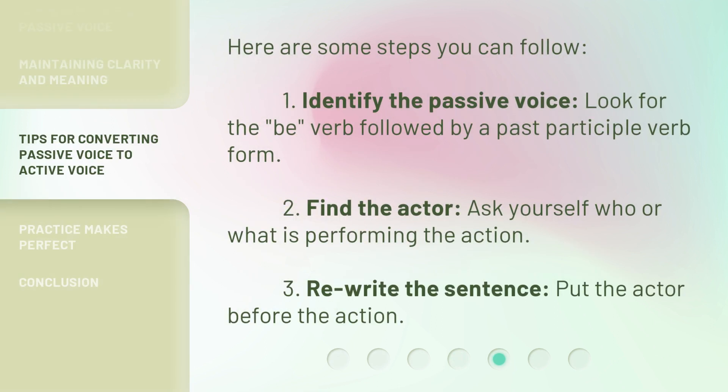Here are some steps you can follow. One: Identify the passive voice — look for the 'be' verb followed by a past participle verb form. Two: Find the actor — ask yourself who or what is performing the action. Three: Rewrite the sentence — put the actor before the action.